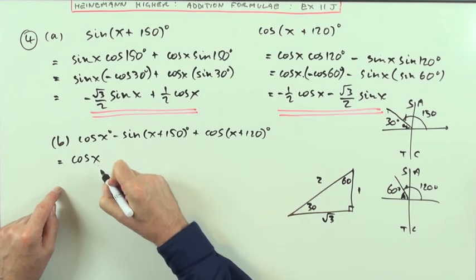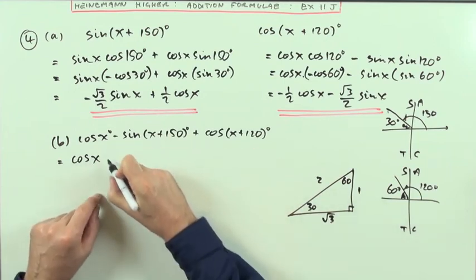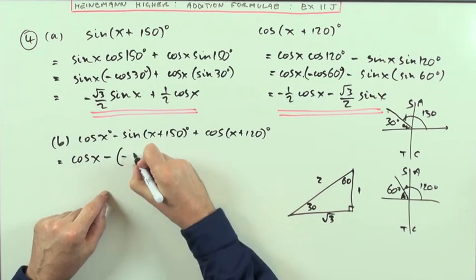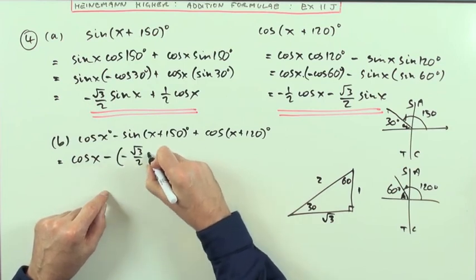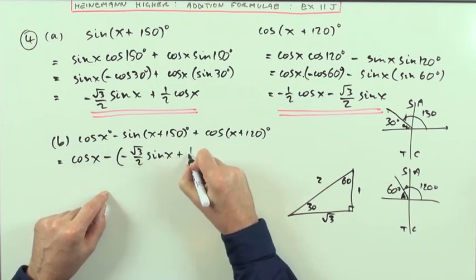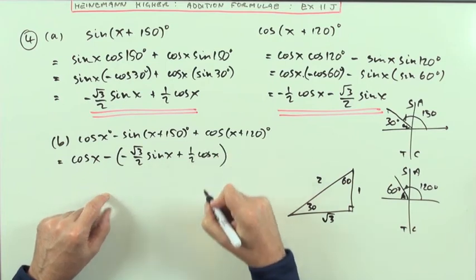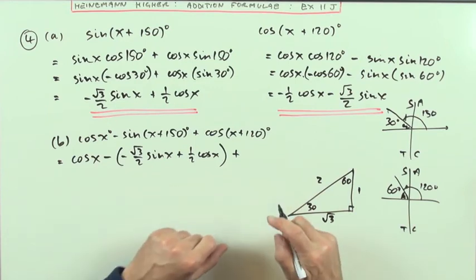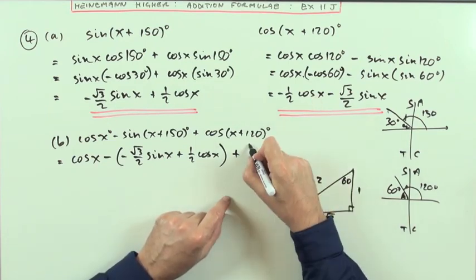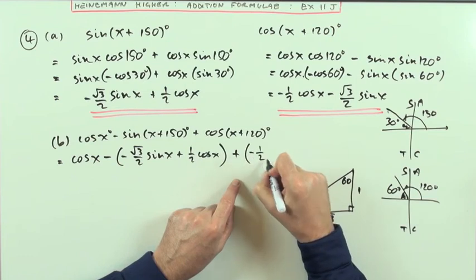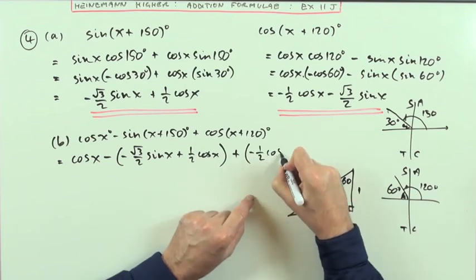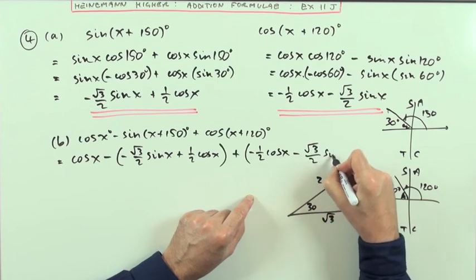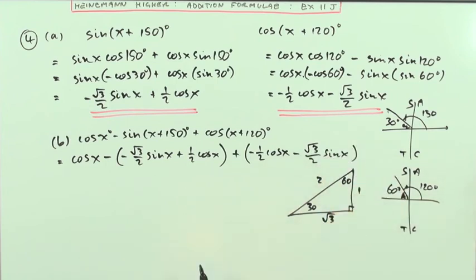So what does that come to? I've got cos x minus, now this expansion which was the first one. So minus in brackets, -√3/2 sin x plus 1/2 cos x. Keeping it in brackets so that the subtraction applies to all terms within the brackets. Plus, I'll put that in brackets as well, 1/2 cos x minus √3/2 sin x.